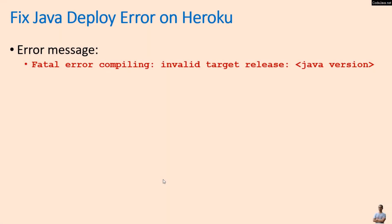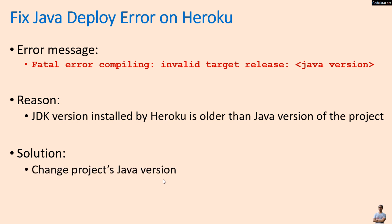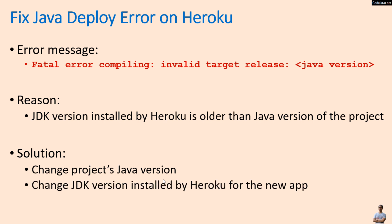The error message is 'fatal error compiling, invalid target release', followed by the Java version of your project. The reason is that the JDK version installed by Heroku is older than the Java version of the project. The solution: you can choose one of two options — the first solution is to change the project's Java version, and the second solution is to change the JDK version installed by Heroku for the app.